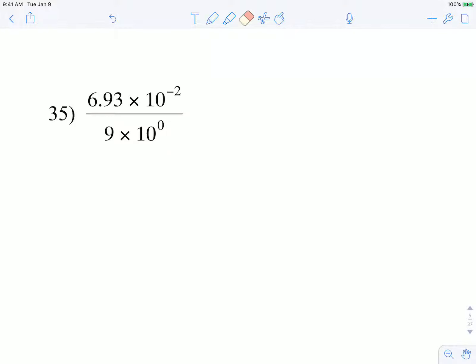In this problem we're dividing two numbers that are in scientific notation. We want to keep our final answer in scientific notation, so I'm going to manipulate it breaking it into two parts. This first half, 6.93 divided by 9, can be broken into one fraction multiplied by the ratio of these tens: 10 to the negative 2 over 10 to the 0.